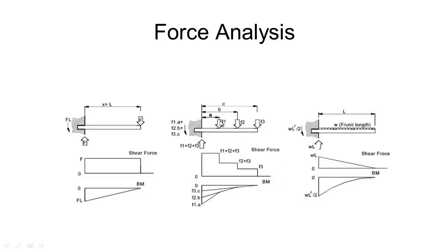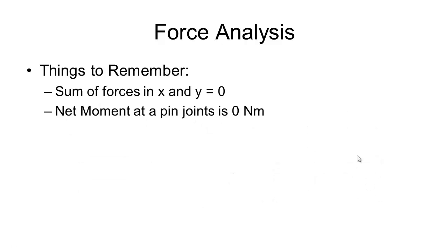So we could also just add in a few more forces, nothing really changes here. Just our bending moment then slopes a bit, or if we have a uniformly distributed load on there, we get a parabola curve once again. Just a couple of things to remember when creating these diagrams, doing any force analysis. First is sum of forces in the X and Y direction equal zero. And the net moment around a pin joint is zero newton meters, so this will come in handy when doing any simply supported beams.